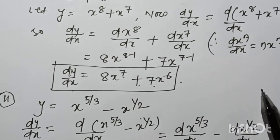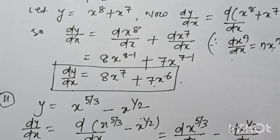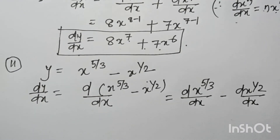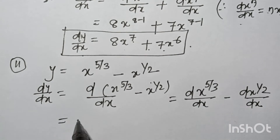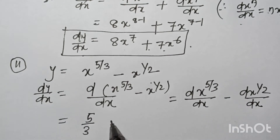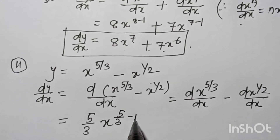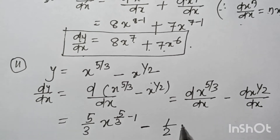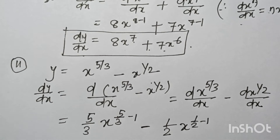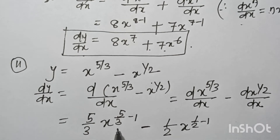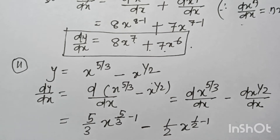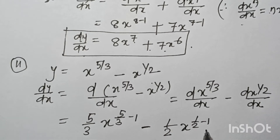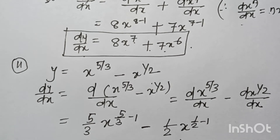Applying the same formula — derivative of xⁿ by dx equals n into x^(n−1) — where n equals 5/3: that gives 5/3 into x^(5/3 − 1), which is 5/3 · x^(2/3). Then minus 1/2 into x^(1/2 − 1), so minus 1/2 · x^(−1/2).